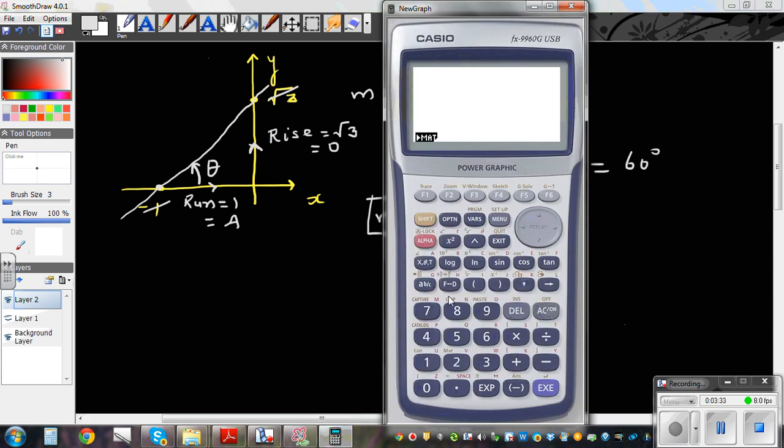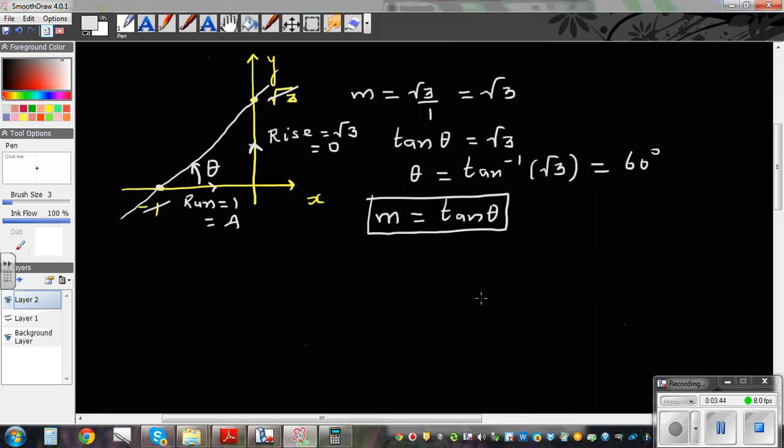So let me show you. So tan, if you press tan 60, is this. And if you press root 3, shift root 3, which is the gradient rise over run, is the same thing.